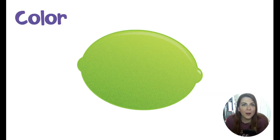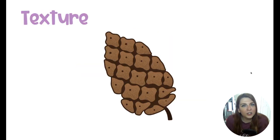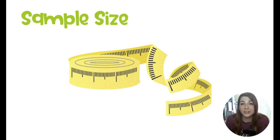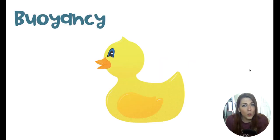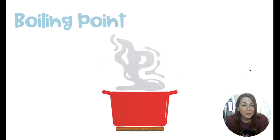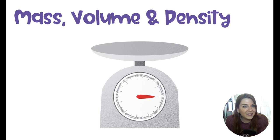Some examples of physical properties are things like color, texture — like this pine cone is very rough — sample size, which means both mass and length, volume, and any type of size is going to be a physical property. We also have buoyancy, which is the substance's ability to float, the boiling point — the temperature at which the substance boils — the melting point, and then mass, volume, density, everything related to the sample's size.